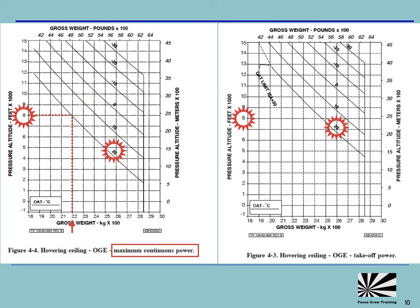In the same conditions but using takeoff power, the helicopter is capable of hovering outside ground effect at 2460 kilograms. So at a weight of 2200, the helicopter would have a power margin available of approximately 10 percent.